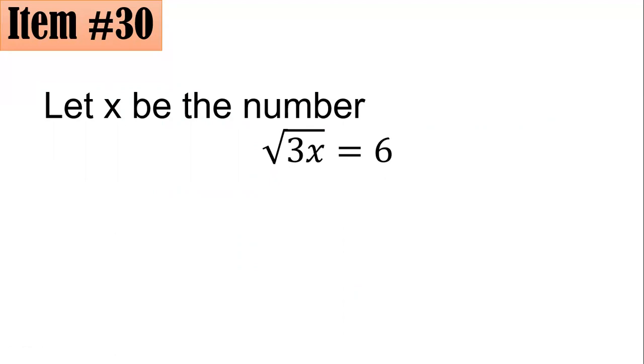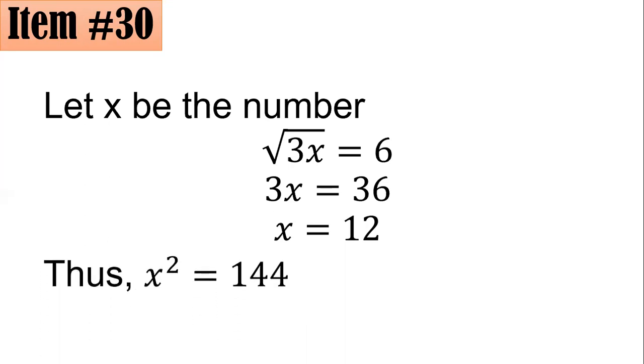To remove the radical sign here, it's important to square both sides. So squaring both sides of the equation gives 3x equals 6 squared, which is 36. Dividing both sides by 3, you have x equals 12. So the number actually is 12. And if you square that number, that means x squared, or 12 times 12, is equal to 144. Letter C is the correct answer.